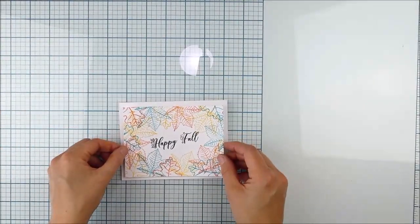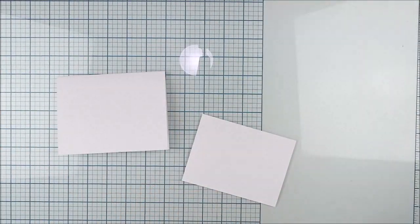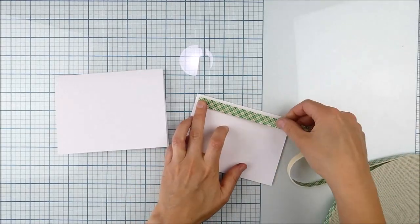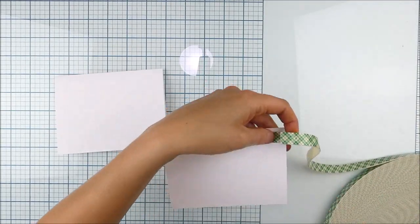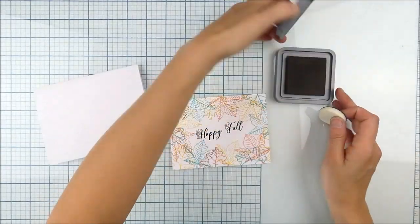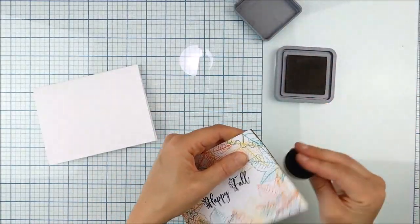All right, now I'm going to pop this up on my white card base with foam adhesive. So I went ahead and layered that on. I'm going to skip ahead a little bit, but once I had my foam on there it occurred to me it felt like it just needed a little something else.